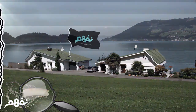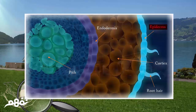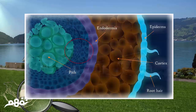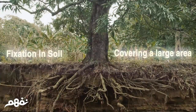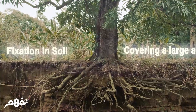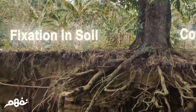Root hairs are the parts responsible for this process. If we make a cross-section of a plant root, we can see root hairs which extend from the epidermis. The figure also shows the cortex, endodermis, xylem, phloem vessels, and pith. The root system extends and subdivides throughout the soil particles for two main reasons.